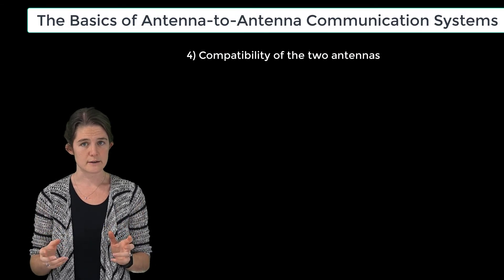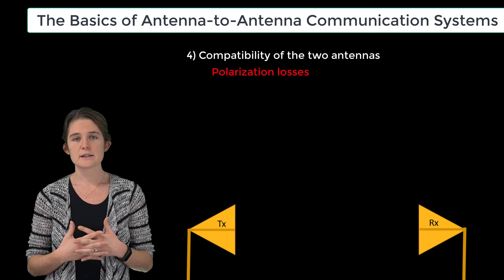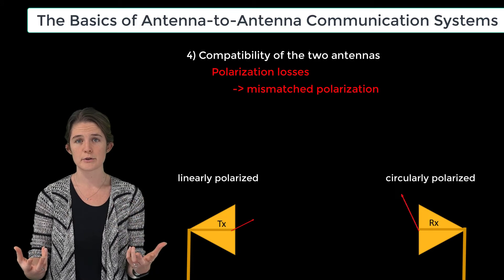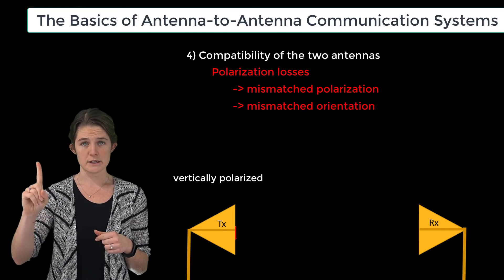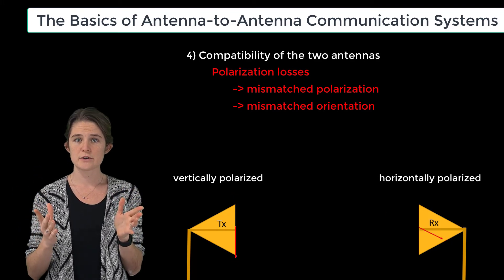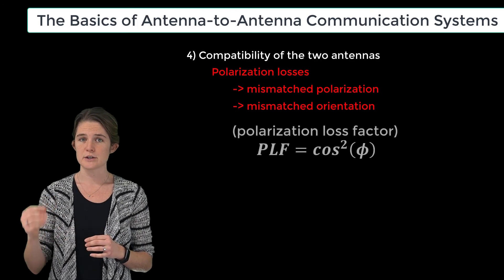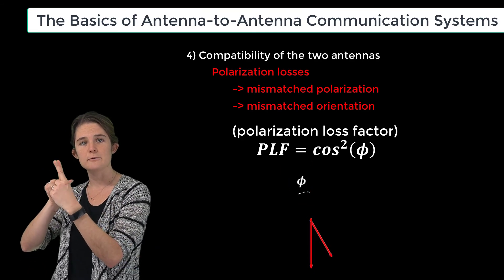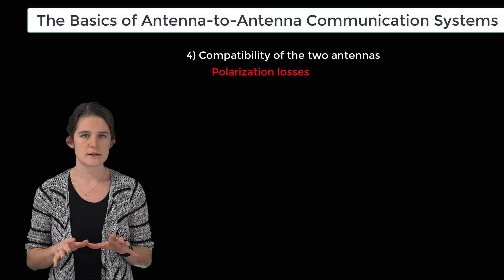The final category of factors in the two-antenna system is compatibility of the two antennas. One such factor is polarization losses — losses incurred due to mismatched polarization between the two antennas, for instance if one is linearly polarized and the other is circularly polarized, or due to suboptimal orientation, such as one antenna polarized vertically and the other horizontally. The portion of transmitted power that does not match the polarization of the receive antenna will be lost. This loss is modeled as the polarization loss factor (PLF), which for two linearly polarized antennas with an angular offset of φ is given by PLF = cos²(φ).